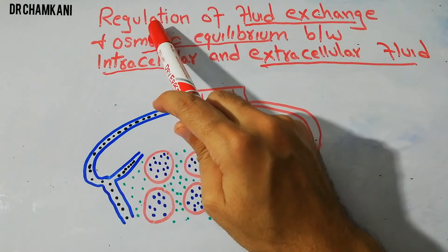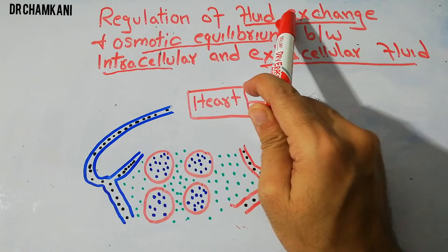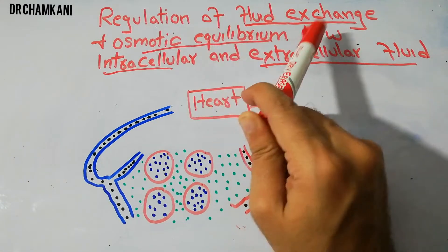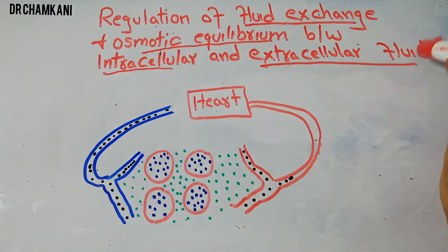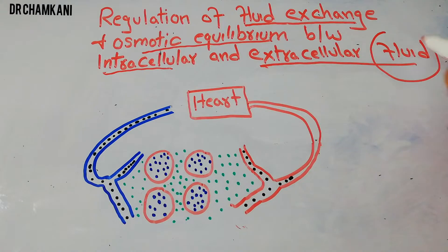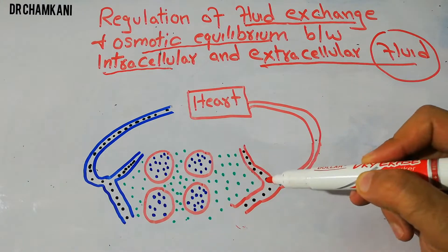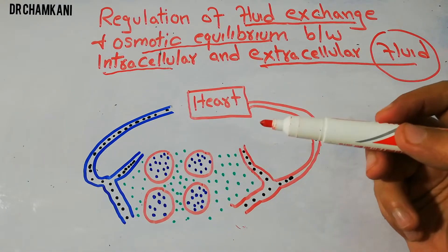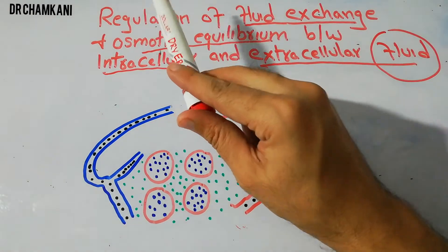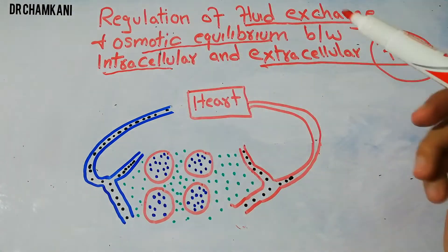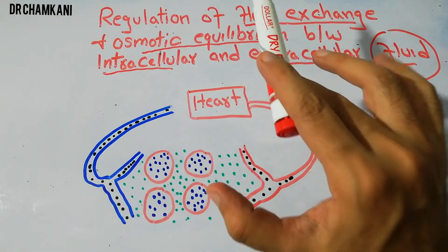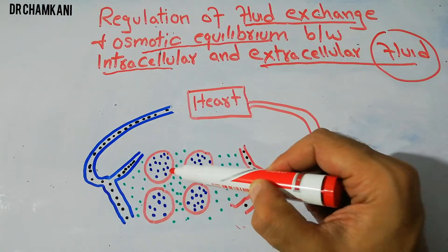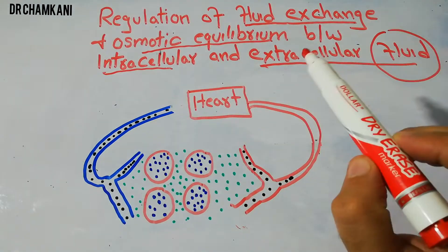Today we are going to talk about regulation of fluid exchange and osmotic equilibrium between intracellular and extracellular fluid. The fluid which is present in the human body in the intracellular compartment and the extracellular compartments — how that fluid is regulated, how the exchange between that fluid is regulated, and how the osmotic equilibrium is maintained between the intracellular and the extracellular fluid.